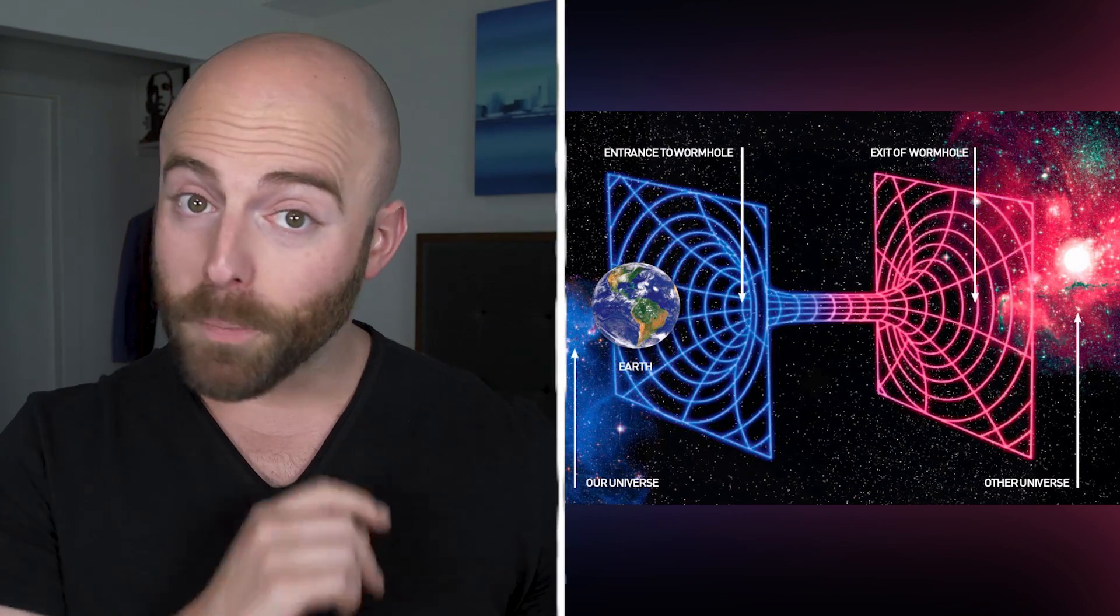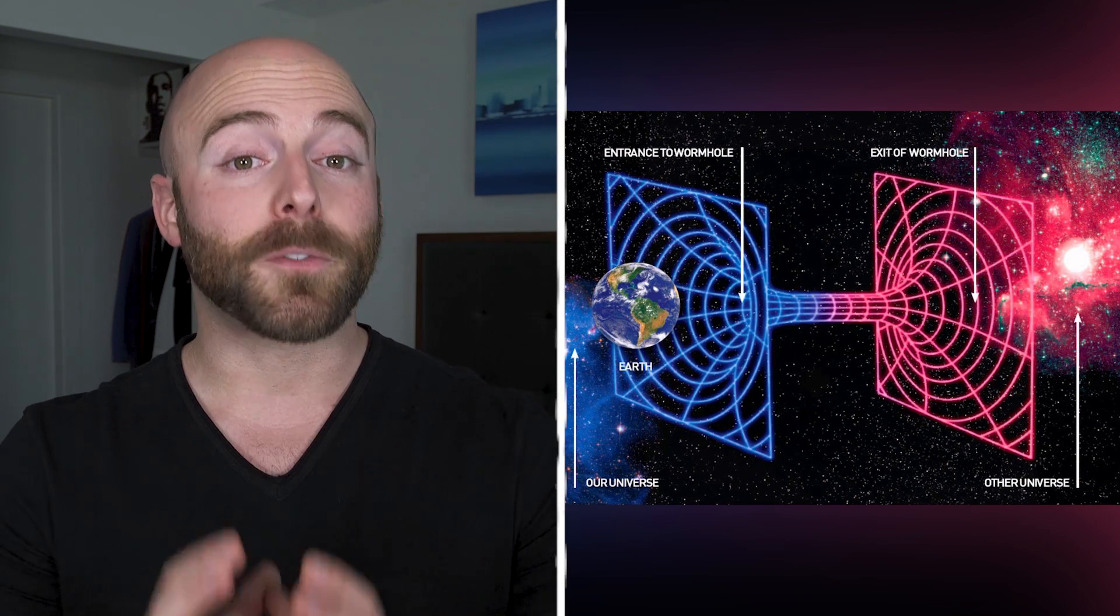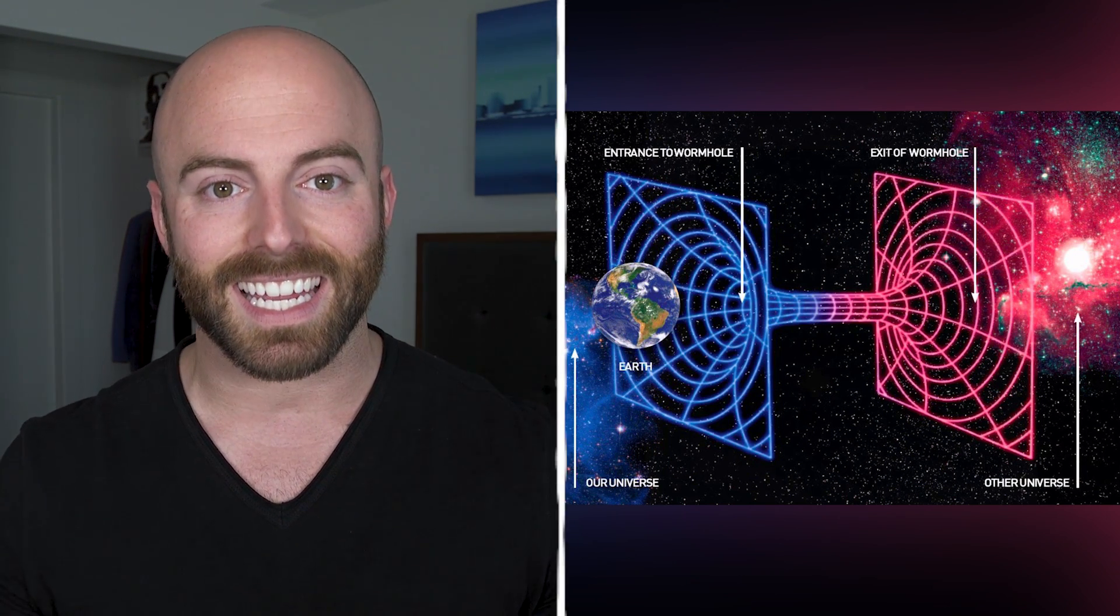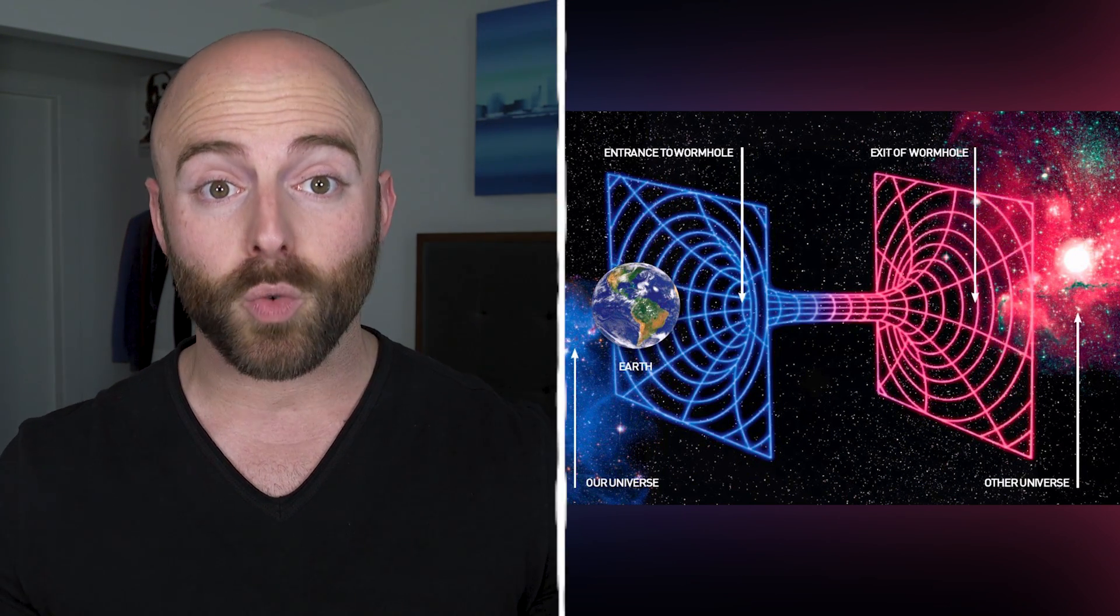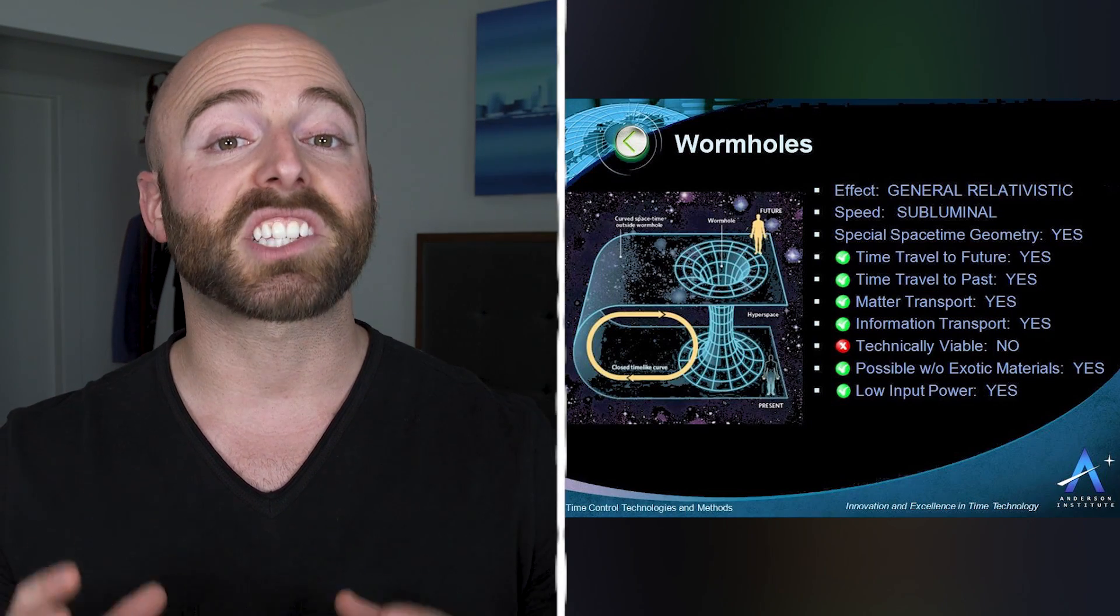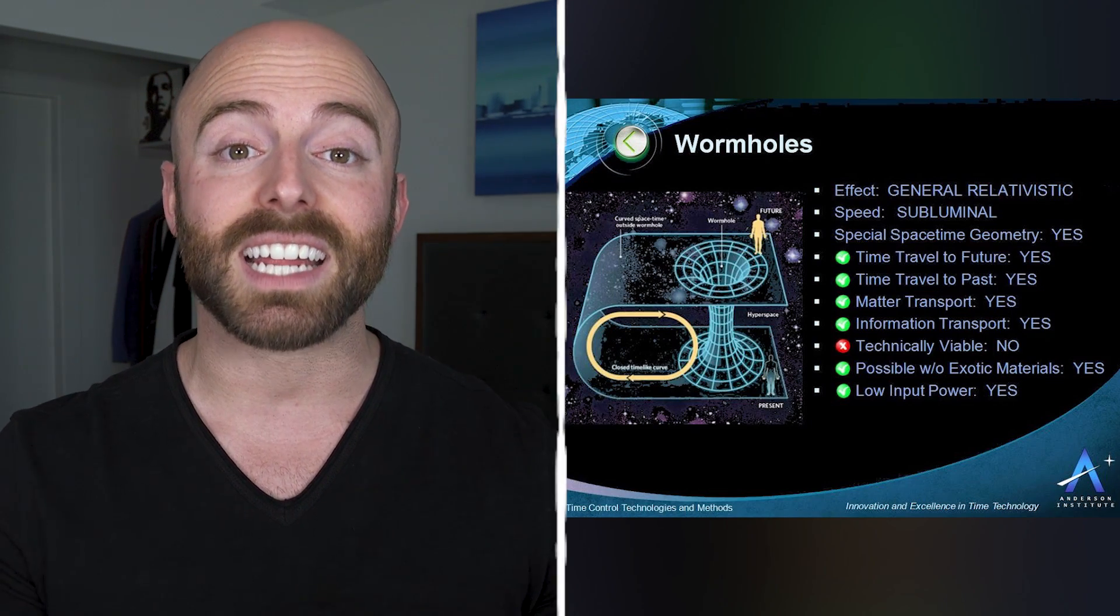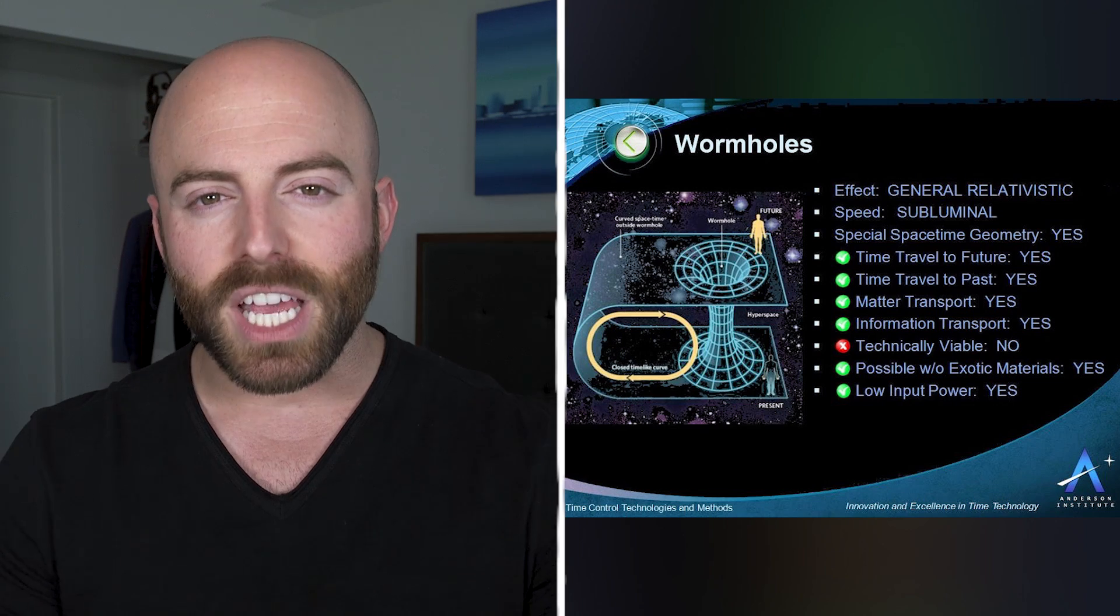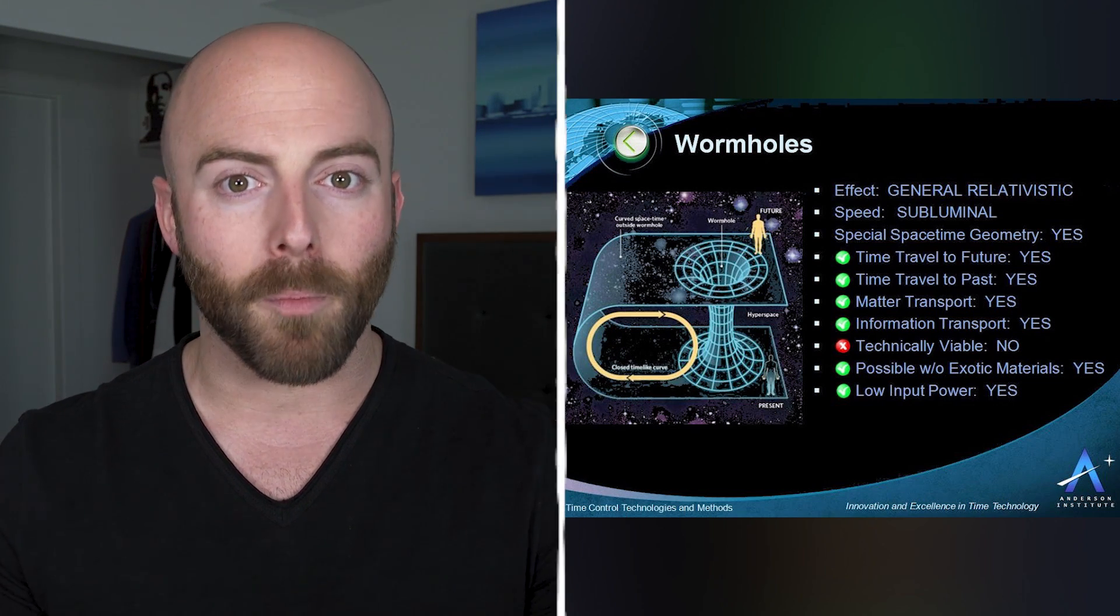It's possible that at the center of some black holes, there exist portals to another region of our universe. This portal is called a wormhole and it was first theorized in 1916 by Austrian physicist Ludwig Flamme. He speculated that a solution to the equations of Einstein's theory of relativity suggested that something called a white hole might exist inside a black hole.